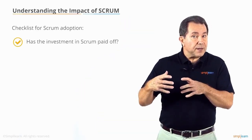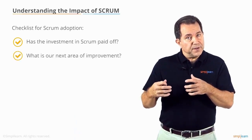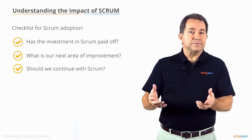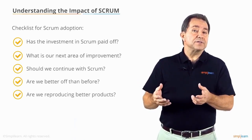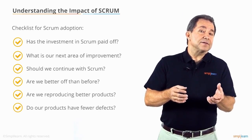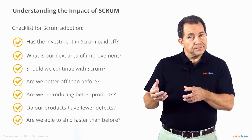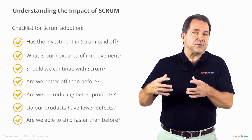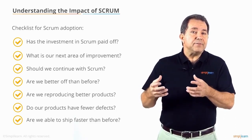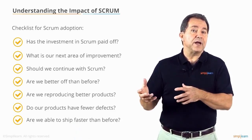Adopting Scrum can be an effort that takes some time, and there is likely to be some organizational gravity that resists the adoption of Scrum. So it's helpful to be able to definitively answer key questions like: has the investment in Scrum paid off? What is our next area of improvement? Should we continue with Scrum? Are we better off than before? Are we producing better products? Do our products have fewer defects? Are we able to ship faster than before? Testing and measuring the results of any effort is necessary to discover whether or not we've been successful.